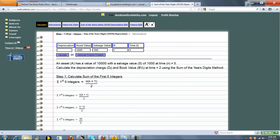We've got an asset value of 10,000 with a salvage value of 1,000 at time 5. We're going to calculate the depreciation charge and the book value. Notice book value is not listed here, but we always calculate that if we can.